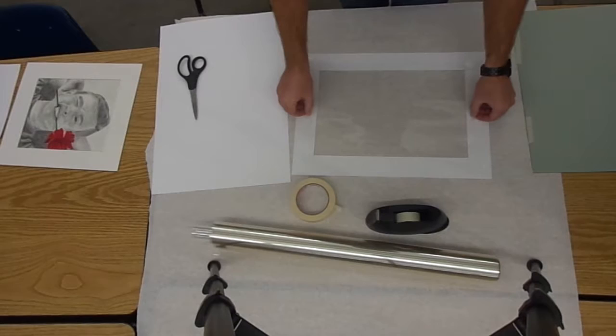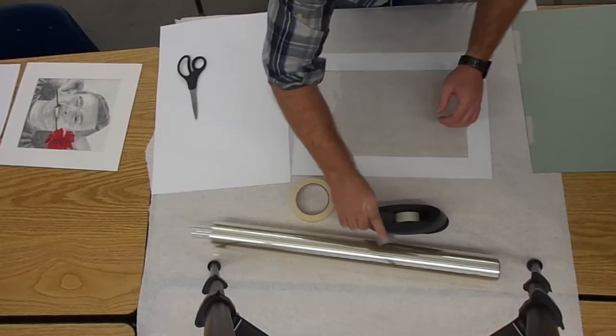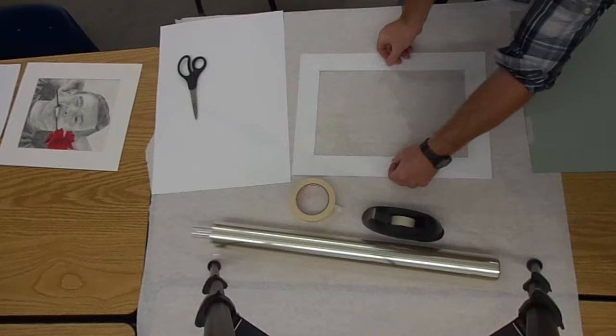I'm going to do the sides, pull a little tight, lay it down. Same thing with the other two sides. Make sure you don't get the tape to where you can see the tape through the opening. Pull it tight and lay it down.